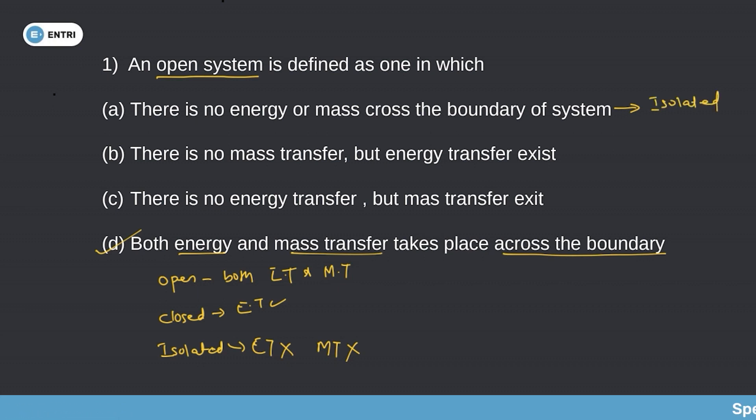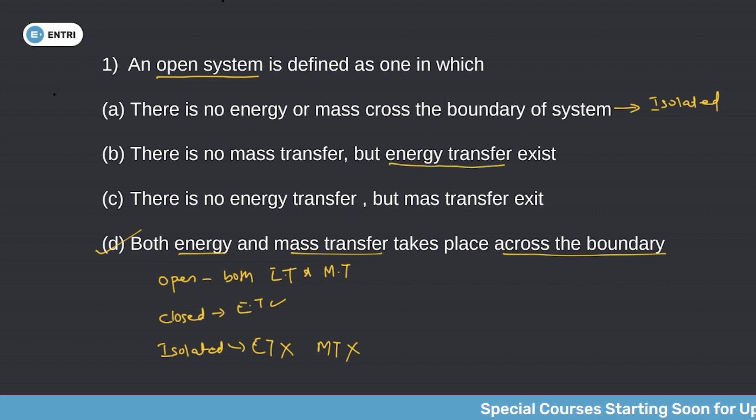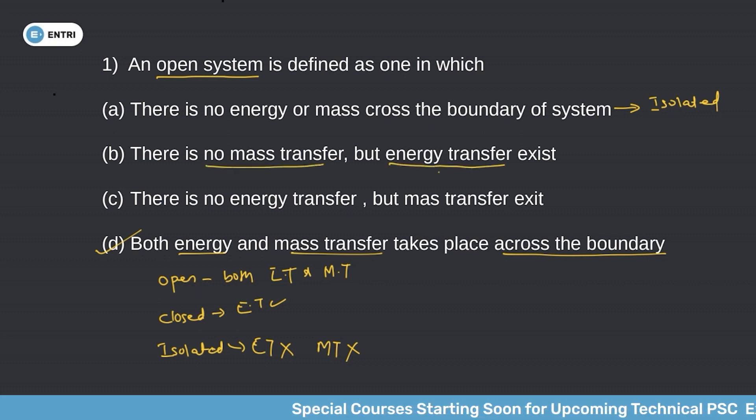A closed system is one where there is no mass transfer but energy transfer exists. This is the definition of a closed system.